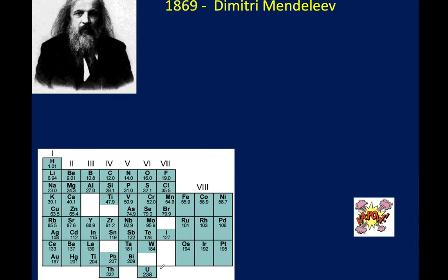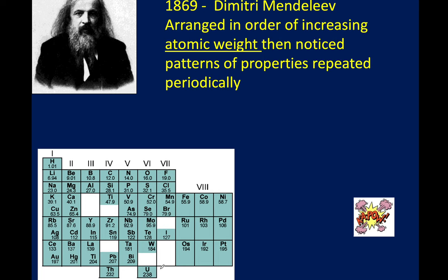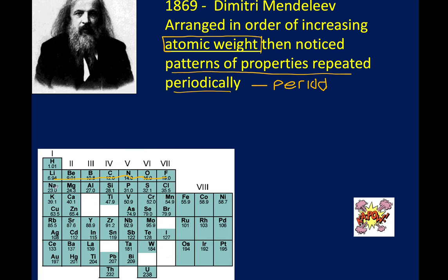So what did Dmitry do? Like every other scientist involved with developing the periodic table, he organized elements in order of increasing atomic weight. What he noticed was that chemical properties repeated periodically — this is where we get the word 'periods' from. The properties repeat as you go across from group 1 to group 8, and then repeat again in the next row: sodium behaves like lithium, magnesium behaves like beryllium, and so on.